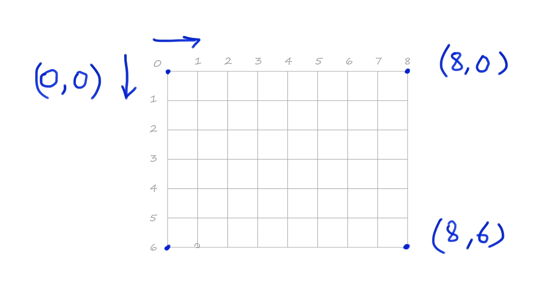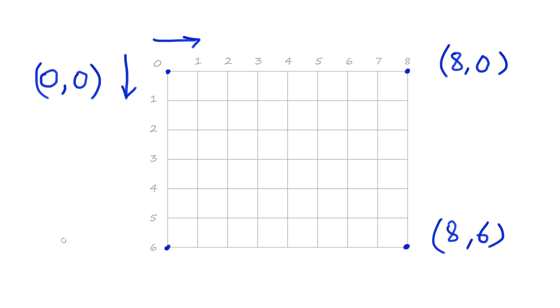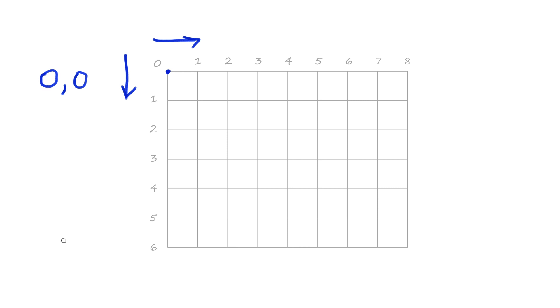Let's test ourselves: where's the bottom left? How far along is it? That's right - zero. How far down? Six. So that's zero comma six. Fantastic - that's not too difficult.